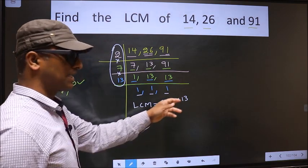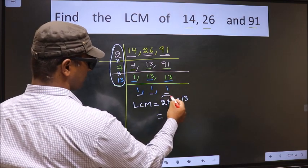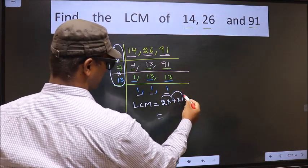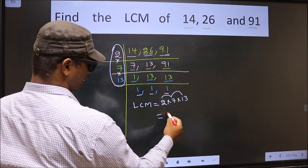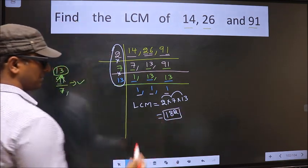Let us multiply these numbers. That is 2 into 7 is 14, into 13 is 182. So 182 is our LCM.